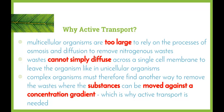So why do we need to use active transport? Multicellular organisms are too large to rely on osmosis and diffusion to remove nitrogenous wastes. Because they are made up of many cells with different functions, waste cannot simply diffuse across a single cell membrane to leave the organism as in unicellular organisms. Unicellular organisms have a very high surface area to volume ratio, so movement of substances across that membrane is quite easy. Complex organisms must therefore find another way to remove wastes where substances can be moved against a concentration gradient — this is why active transport is required.